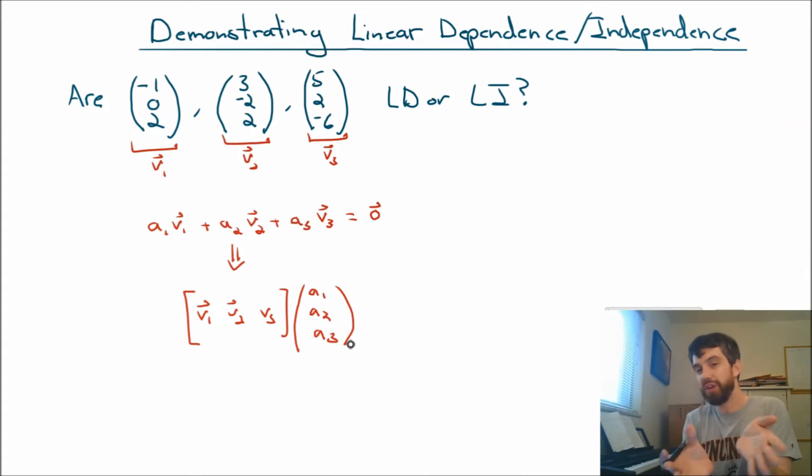That is, any time I have a linear combination, I can use the definition of the matrix vector product to rewrite that linear combination as some matrix times some particular vector. And then we're trying to claim that this is going to equal the vector 0, 0, 0.